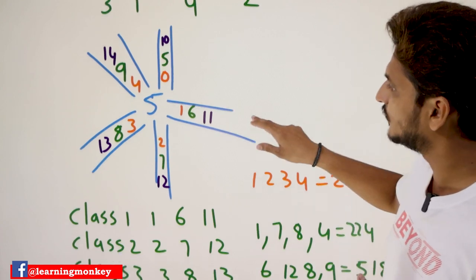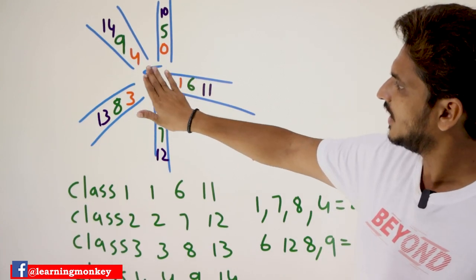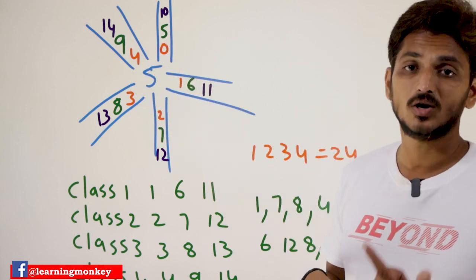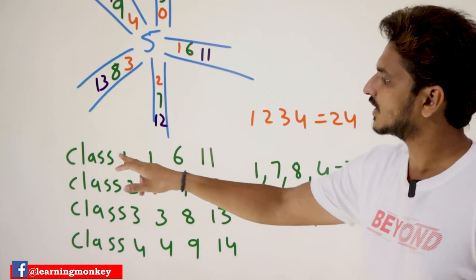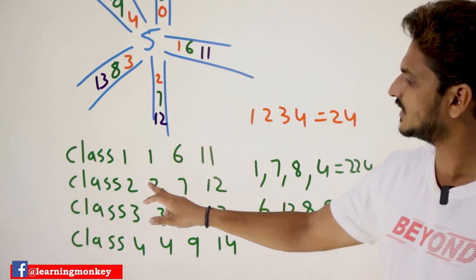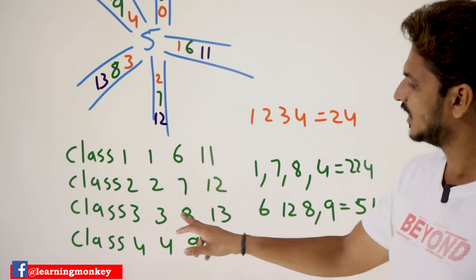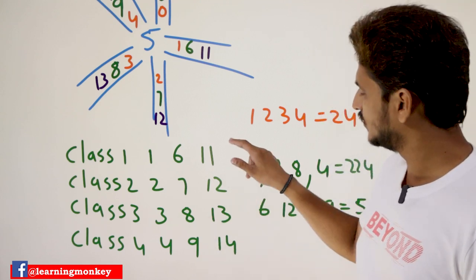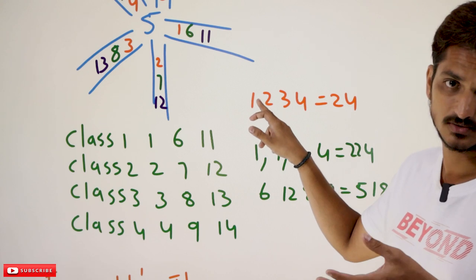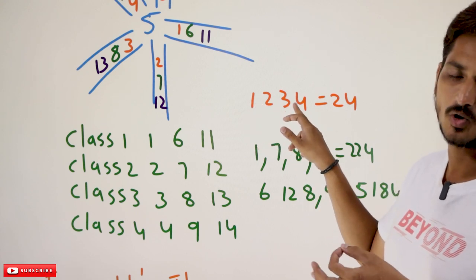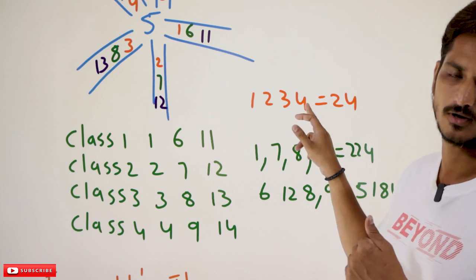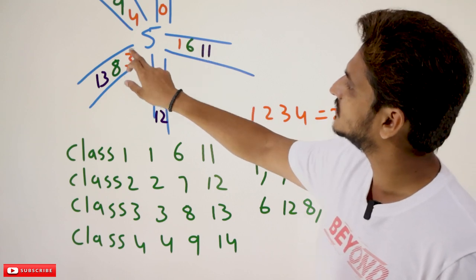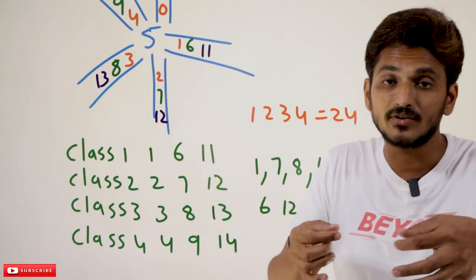Now the point we need to understand: this is the class diagram for 5, because it is going to generate 0, 1, 2, 3, 4. These are the modulus values which we are going to generate. Class 1 contains 1, 6, 11. Class 2 contains 2, 7, 12, and so on. Class 3 contains 3, 8, 13. Class 4 contains 4, 9, 14. Now, 1 mod 5 = 1, 2 mod 5 = 2, 3 mod 5 = 3, 4 mod 5 = 4. These values are taken from class 1, class 2, class 3, class 4 — all belong to different classes. Meaning, you take any two numbers — they are not congruent.